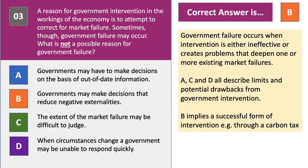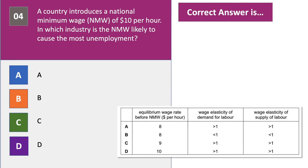Two more questions to go on intervention. Here's question number four. A country introduces a national minimum wage of $10 per hour. In which industry — A, B, C, or D — is the minimum wage likely to cause the most unemployment? Have a go please at question number four.